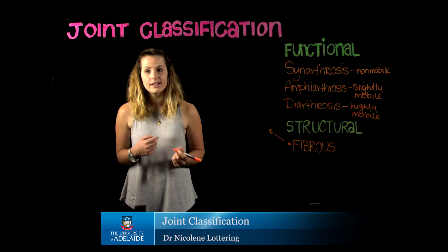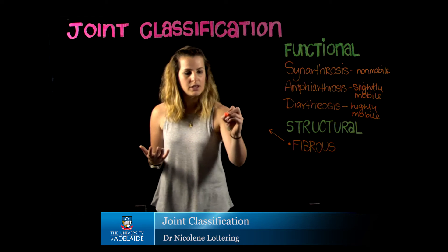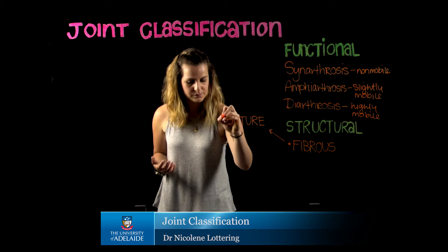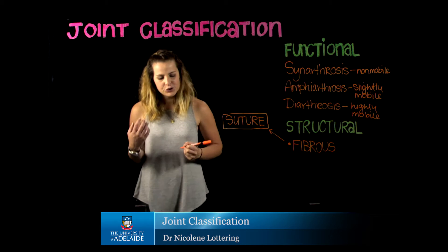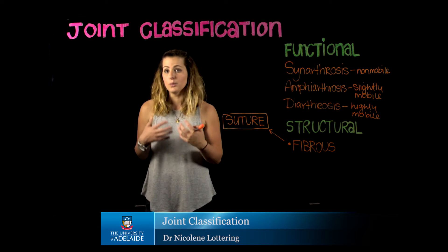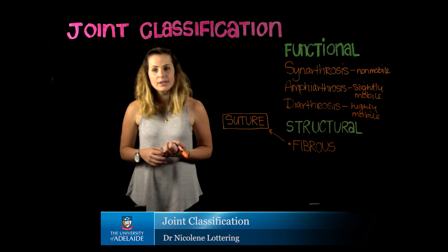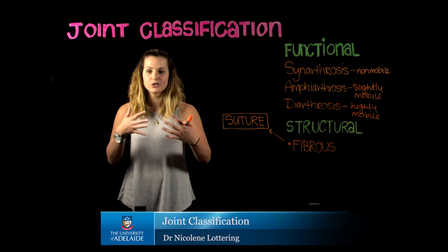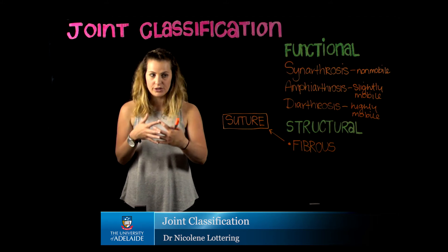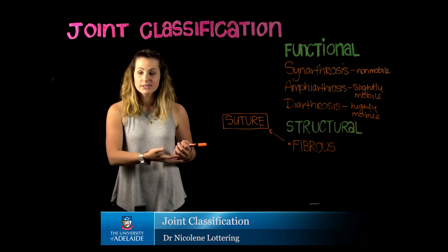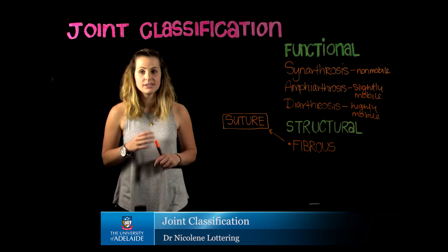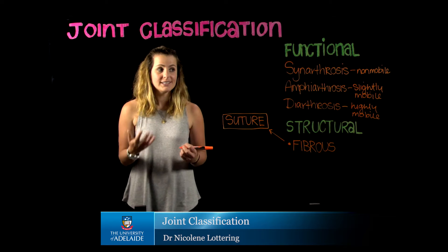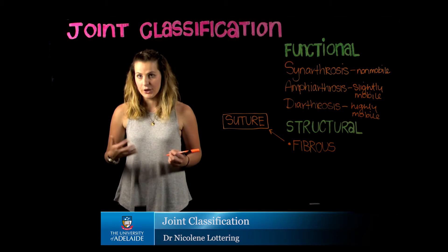The first kind is called a suture. A suture forms in the skull and is essentially made up of a very thin layer of connective tissue occurring between interlocking bones. Our fibrous structural types such as a suture are designed so that they're not going to permit any movement — so this is in fact going to be a synarthrotic joint.